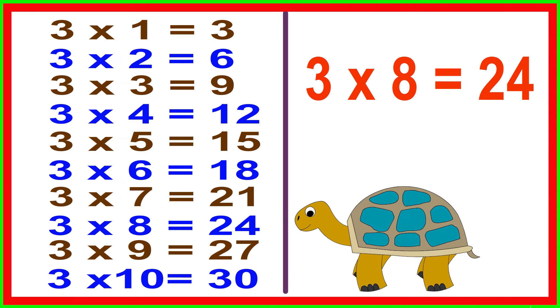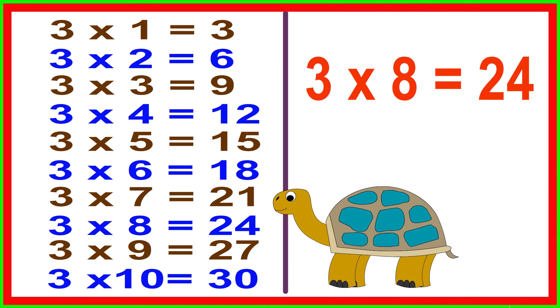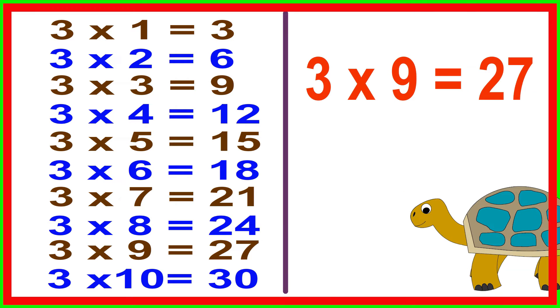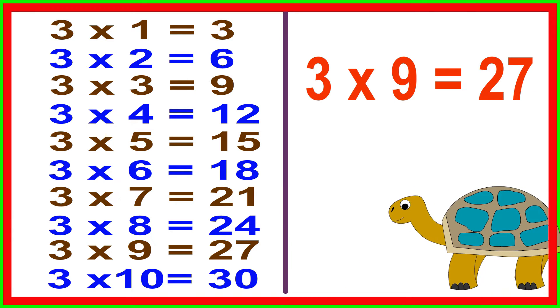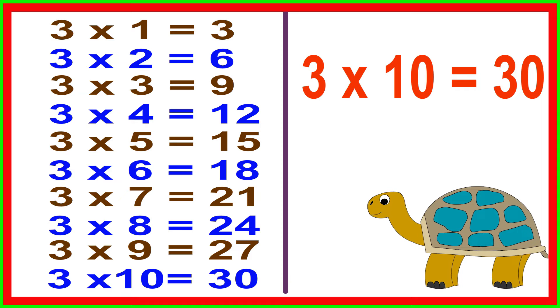3 times 8 equals 24, 3 times 9 equals 27, 3 times 10 equals 30.